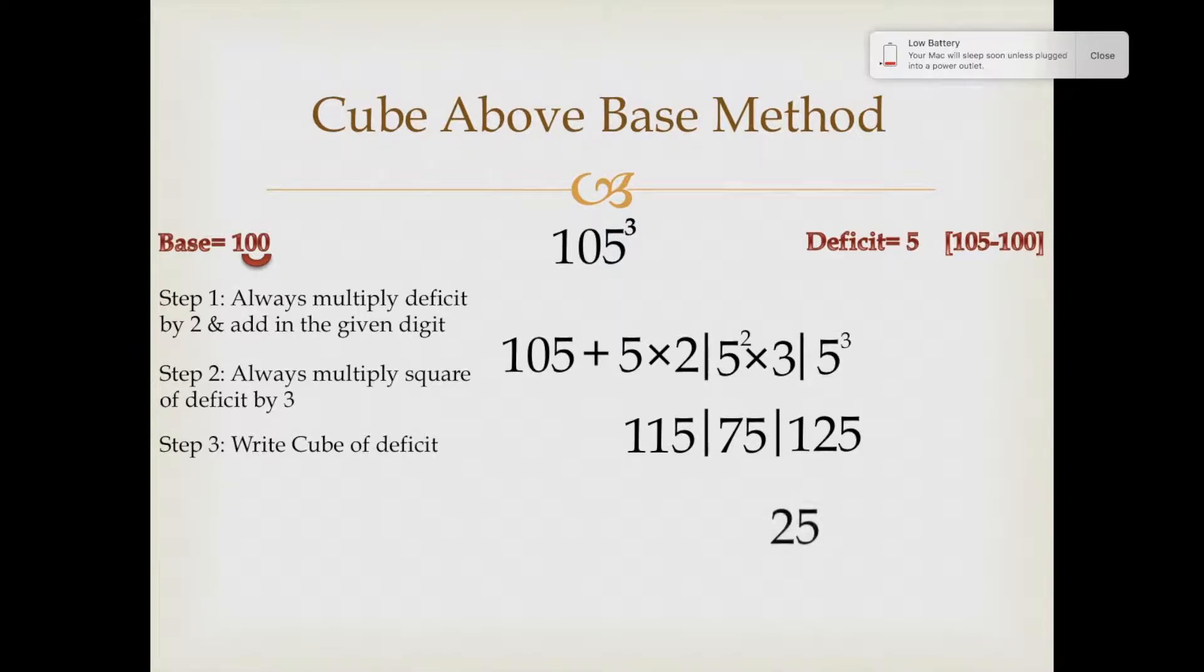According to this, write down 25 as it is and the extra digit which is one would be carried over in the next digit and it would give us 76. And the leftmost digit would be written as this. 1157625 is the answer.